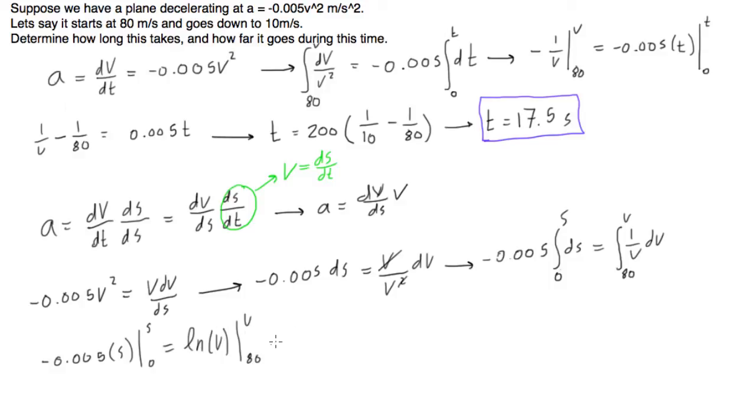We're going to integrate both sides. We have negative 0.005 times s from s to 0, and this equals ln of v from 80 to v. Let's plug these in. We get negative 0.005 times s minus 0, so that just goes away. We get ln of v minus ln of 80. The first thing we want to do is multiply everything by negative 1. This becomes minus ln of v plus ln of 80 equals positive 0.005s.